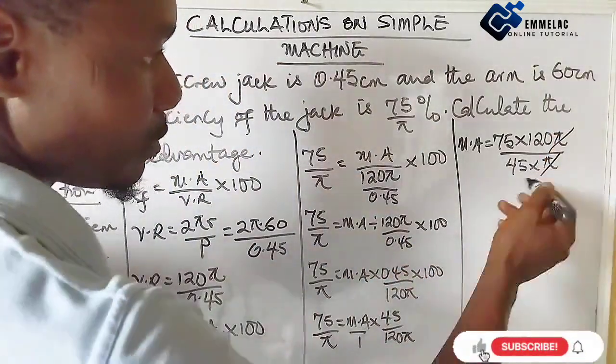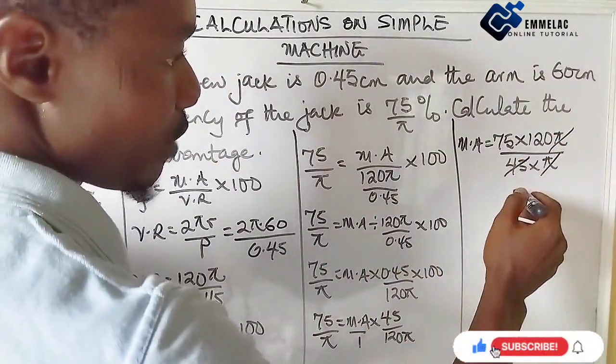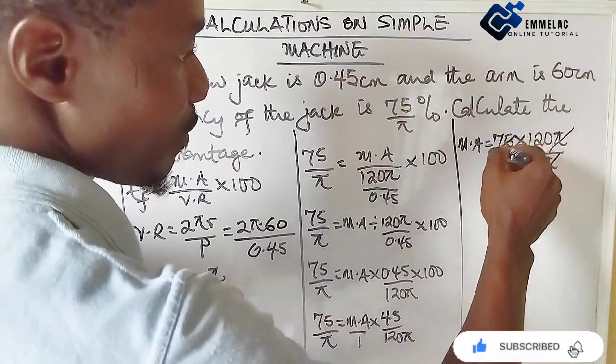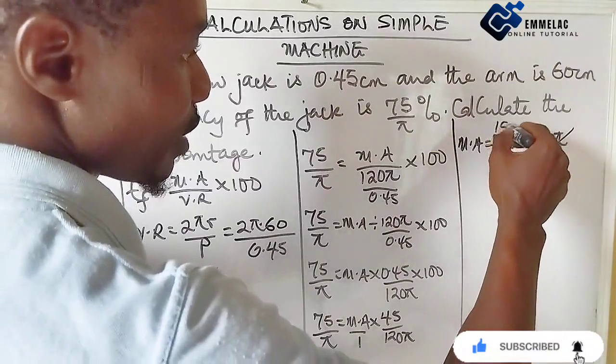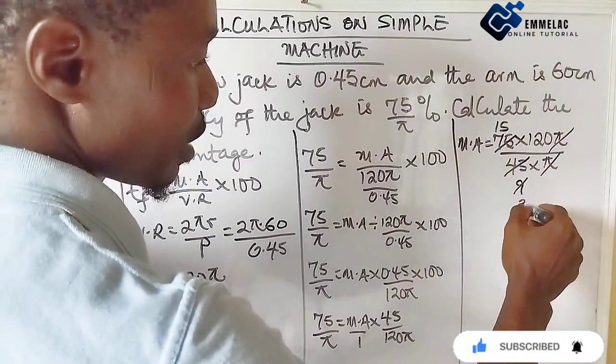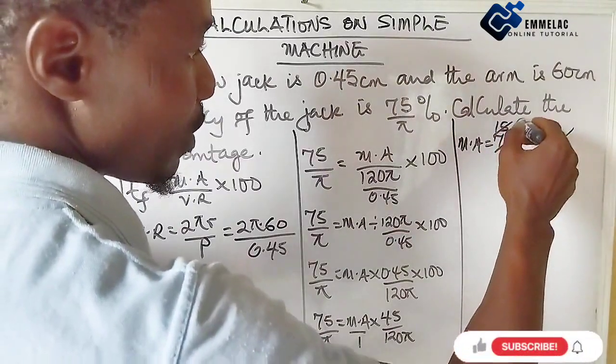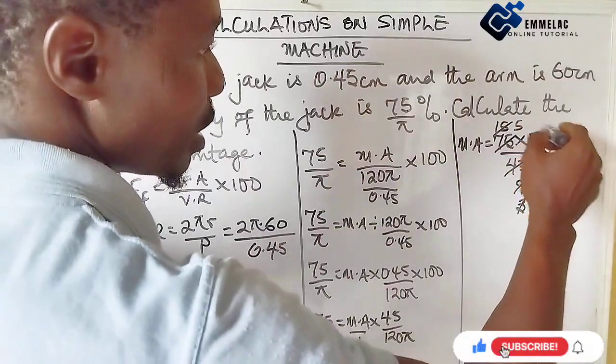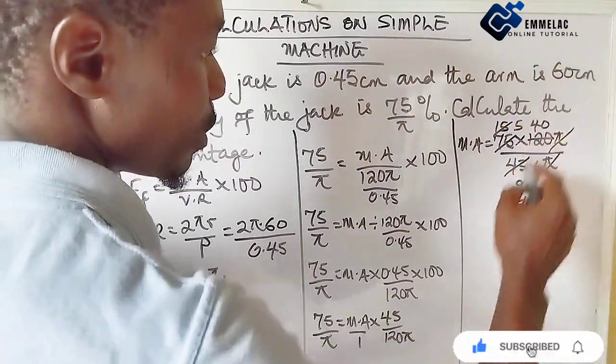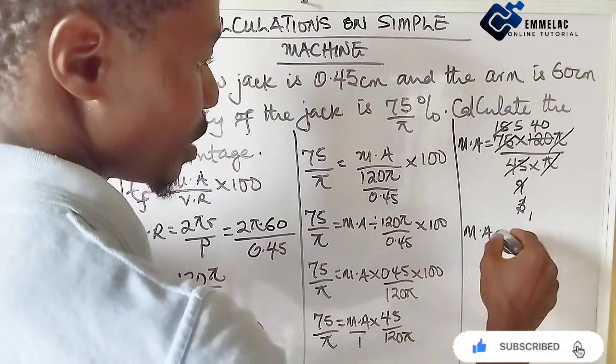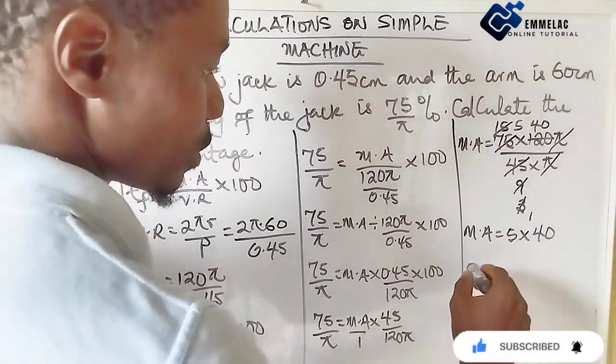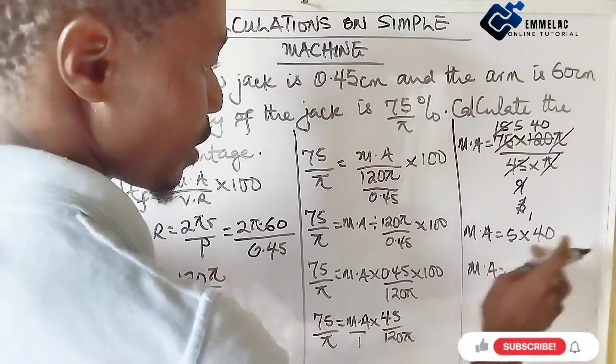Because this is technically over one, π will now cancel π. Now dividing: 5 here we have 9, 5 here we have 15, 3 here we have 3, 3 here we have 5, 3 here we have 1, then 3 here we have 40. So mechanical advantage, we have 5 times 40, so the mechanical advantage is 5 times 40, which gives us 200.